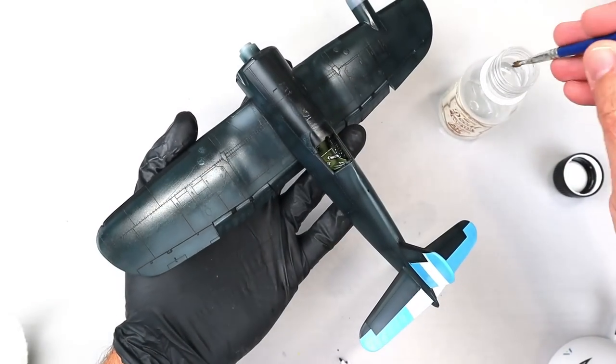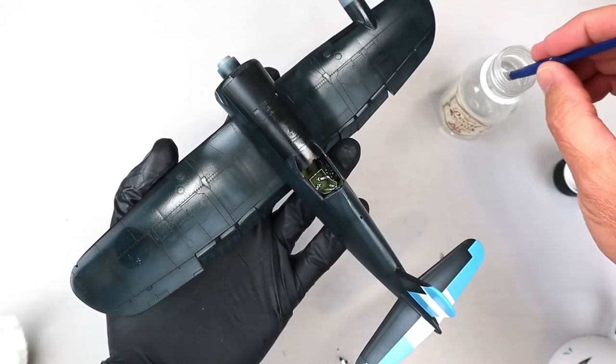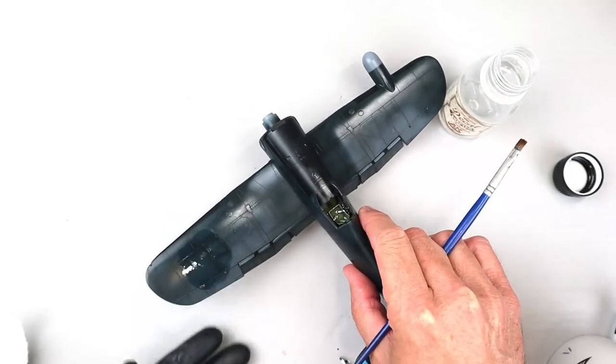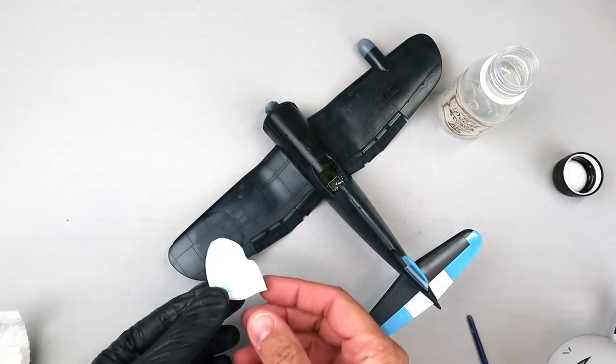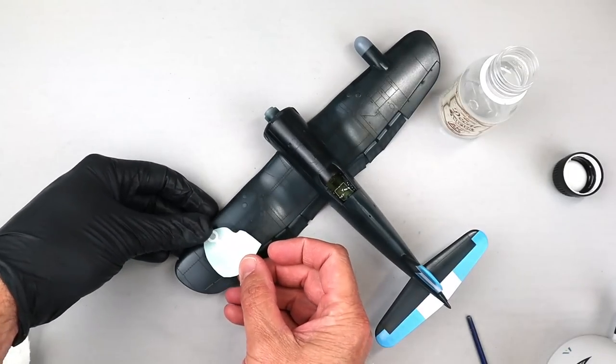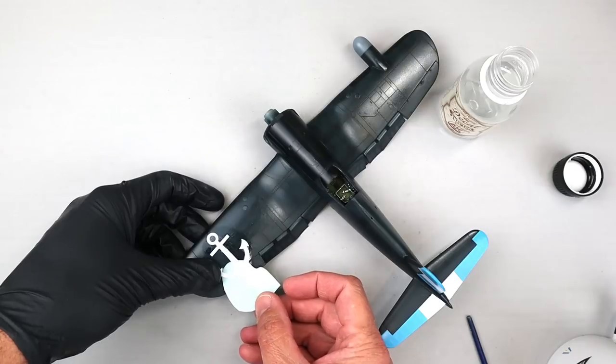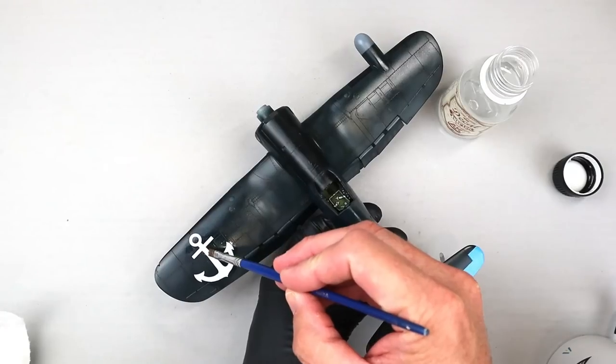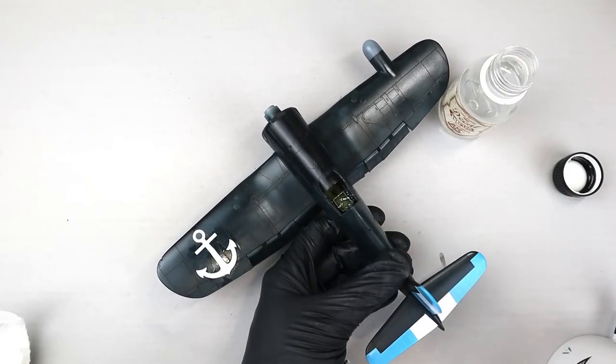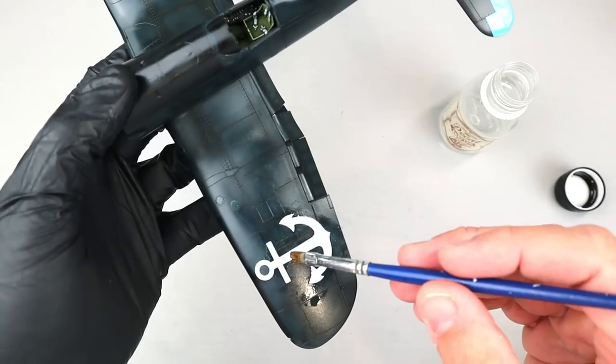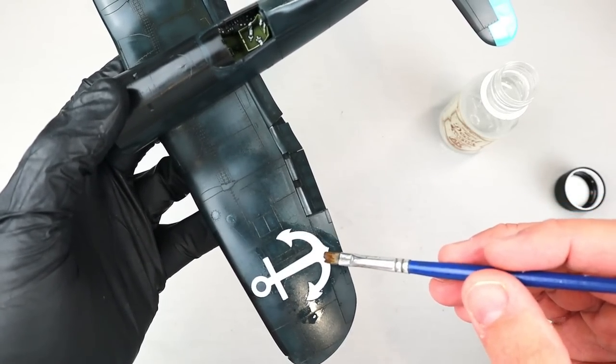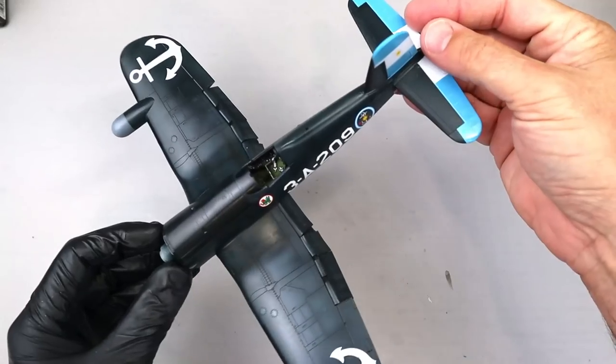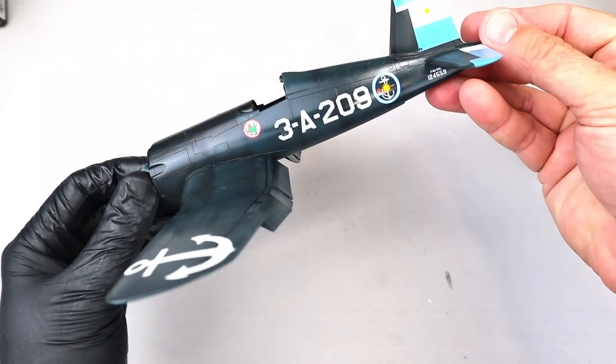To apply the decals, I first coated the area where the decal would be applied with a liberal amount of AK's decal setting solution. I soaked each decal in warm water and then slid it into place over the setting solution. I applied another coat of the solution to the decal once I had it in the correct position. I worked my way around the entire model using the same process, applying each decal to the airframe and continuously checking my references to assure the correct placement. Make sure to do this as Argentinian Corsairs had different anchor marking placements on the wings that were unique to a specific tail number.